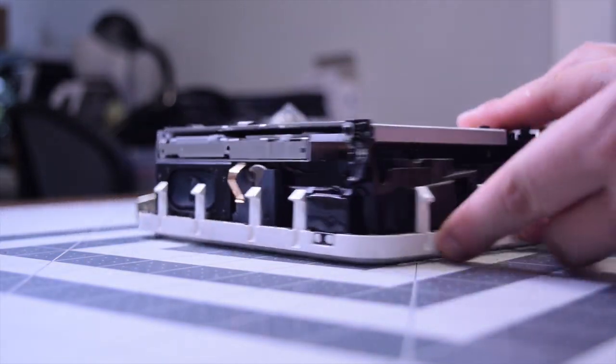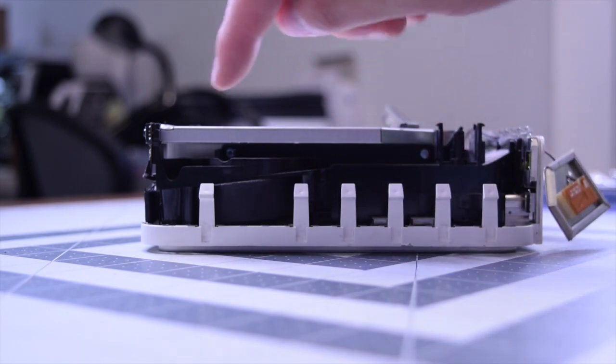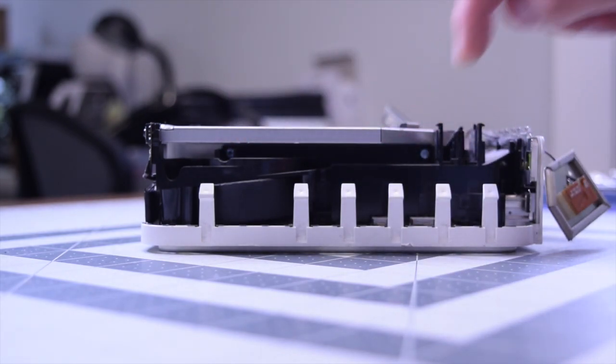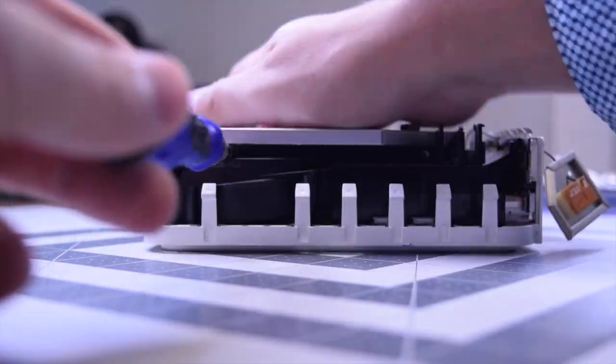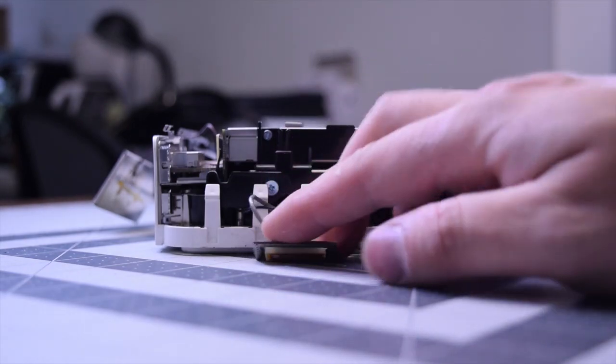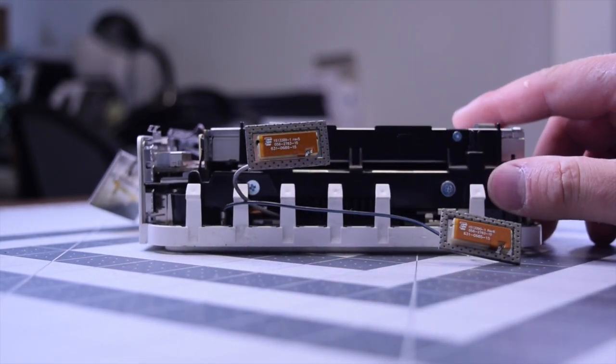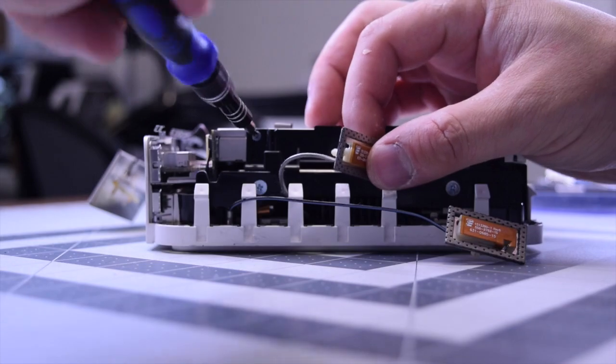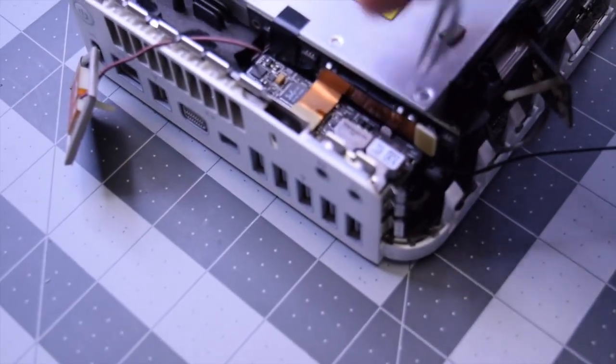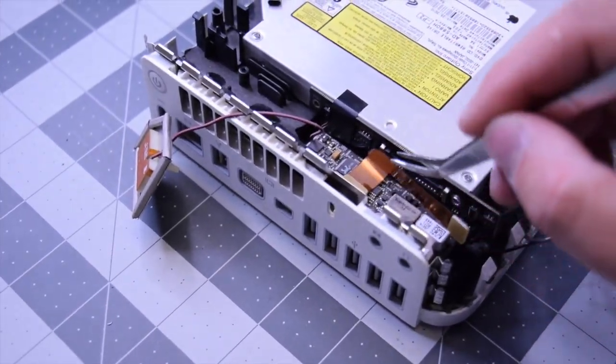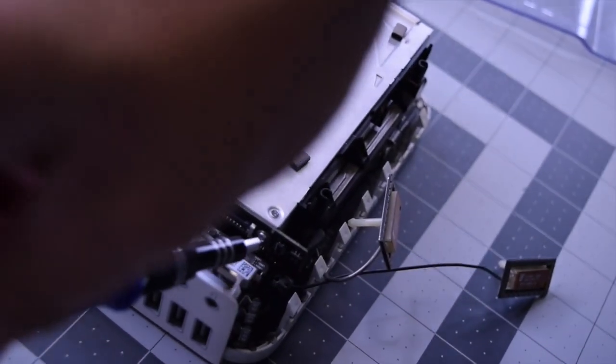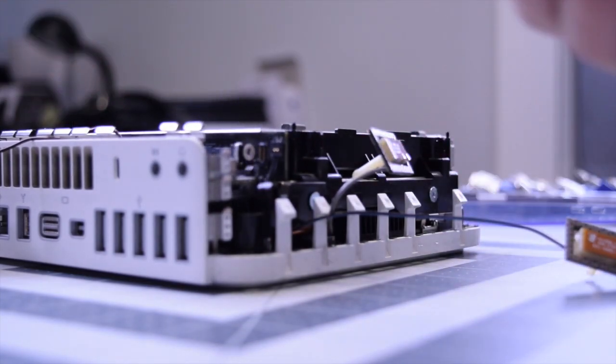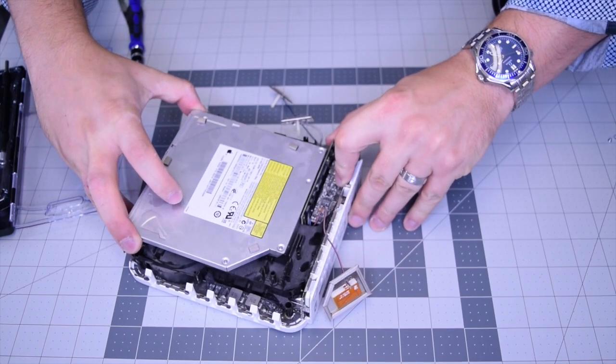There's one there that we'll need an adapter for and one right there. Go ahead and remove those four. Use an extension to remove that one right there. Now we need to go ahead and peel back and disconnect that bridge ribbon cable right there. Gently disconnect that. Peel back that little piece of tape and now the fifth and final screw right behind there that will release the DVD drive.